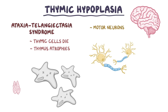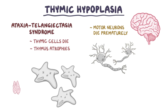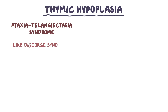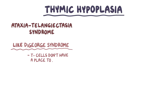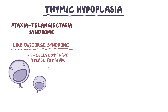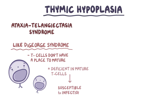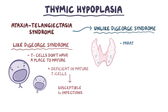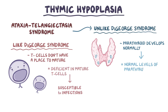Motor neurons in the cerebellum also die prematurely, leading to uncoordinated muscle movement called ataxia. Just like in DeGeorge syndrome, T cells don't have a place to mature, and so these people become deficient in mature T cells, making them susceptible to infections. In ataxia telangiectasia syndrome, unlike DeGeorge syndrome, the parathyroid glands develop normally and secrete normal levels of parathyroid hormone, which results in normal calcium levels in the blood.